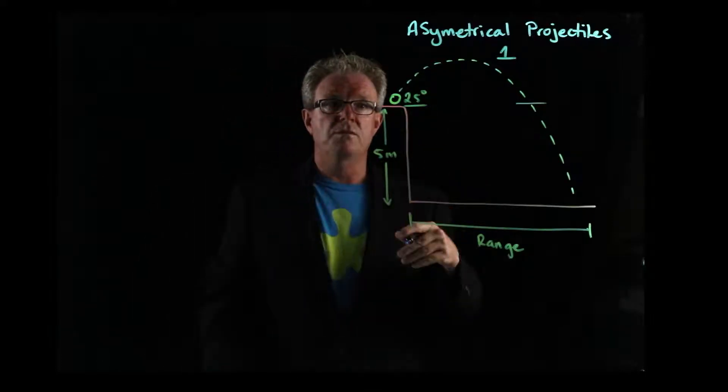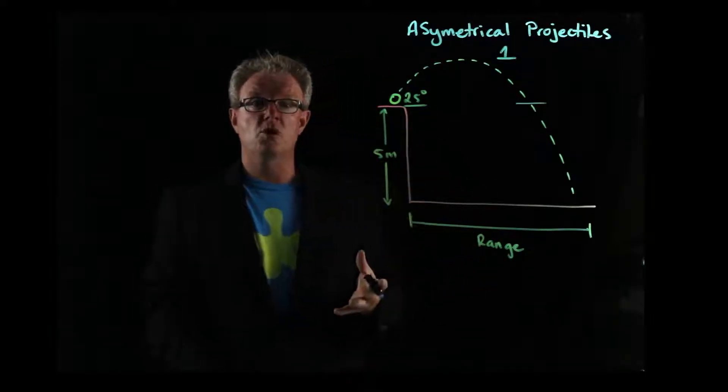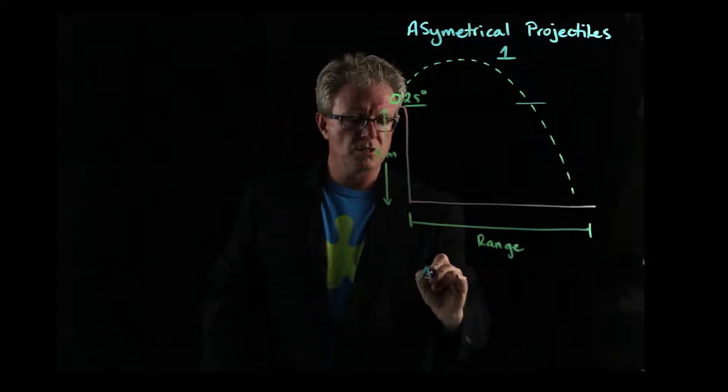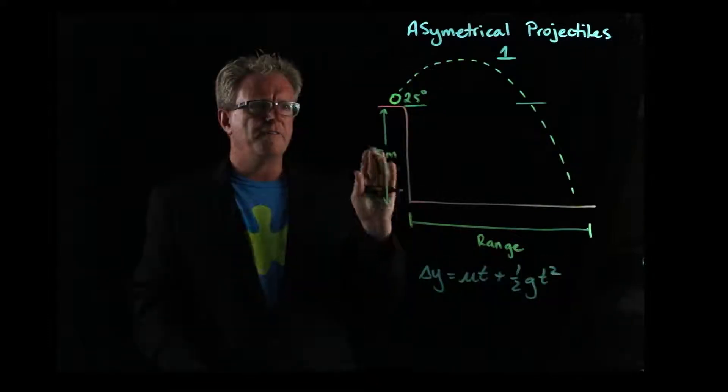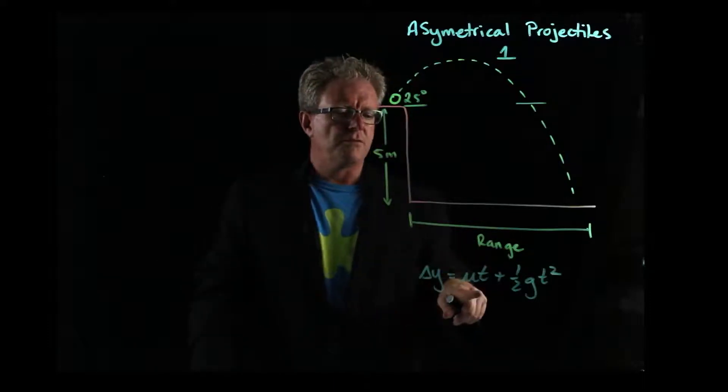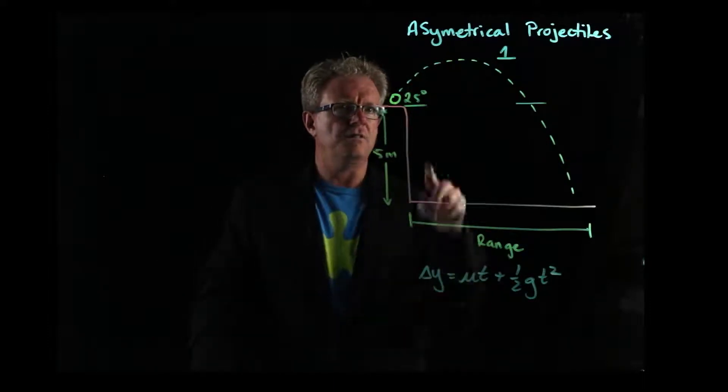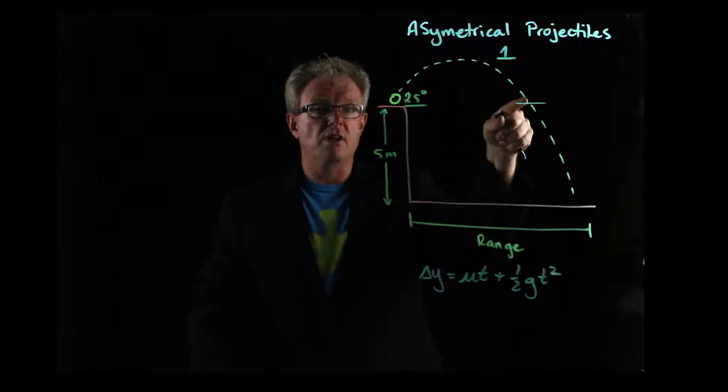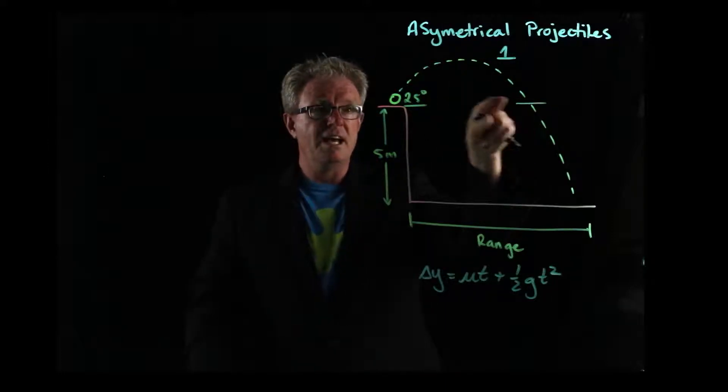And when we did that, the first thing we wanted to do was find out the time of flight. And so we used this equation here. And finding the time of flight was easy because then we went, okay, the time of flight can be found if it's a trajectory like this and stops there and it's symmetrical.